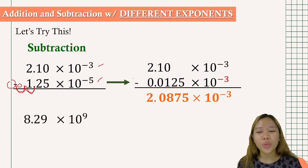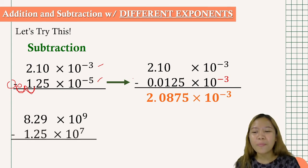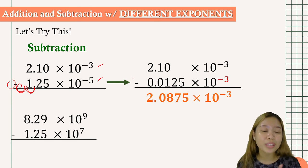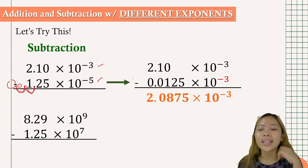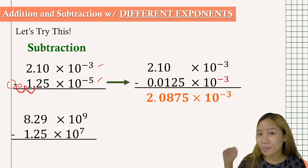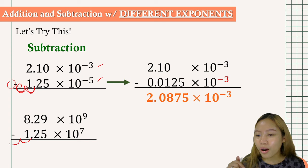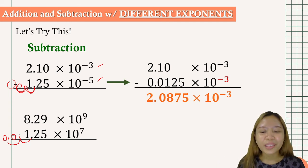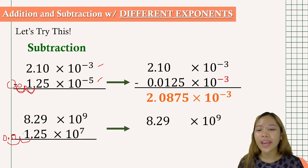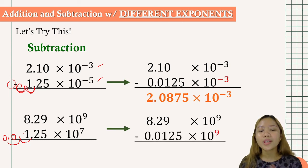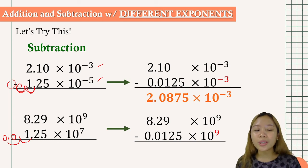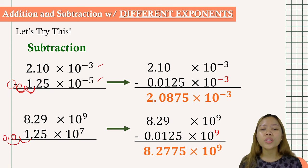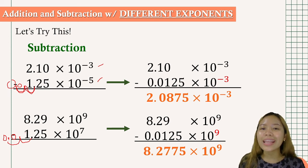Another example: 8.29 times 10 to the 9th minus 1.25 times 10 to the 7th. The larger exponent is 9. We move 1.25 two places to the left, from 7 to 9, giving 0.0125 times 10 to the 9th. Subtracting: 8.29 minus 0.0125 equals 8.2775 times 10 to the 9th as our final answer.